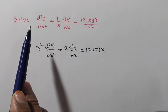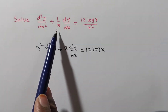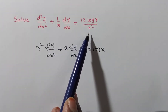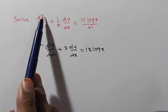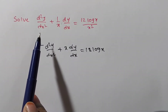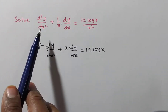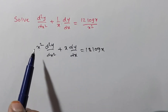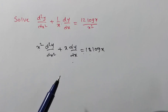Friends, now we are solving the given differential equation: d²y/dx² plus (1/x)·dy/dx equals 12·log(x)/x². We rearrange by multiplying through by x², giving x²·d²y/dx² plus x·dy/dx equals 12·log(x).